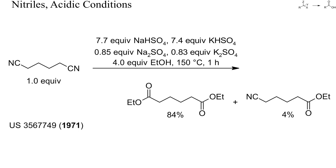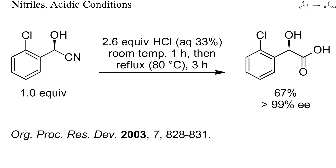Nitriles can also be converted into esters directly, for example by heating with an alcohol and some strong acid. Here, a dinitrile was converted into diethyl adipate by heating with ethanol and an excess of alkali bisulfate. Cyanohydrins are readily available from aldehydes and hydrogen cyanide and can be hydrolyzed to alpha-hydroxy acids. Here, an enantiomerically pure aromatic cyanohydrin was hydrolyzed by refluxing with concentrated hydrochloric acid for 3 hours. No racemization or conversion of the benzylic hydroxy group into chloride occurred, because the benzylic cation was destabilized by the cyano and carbonyl group.